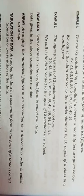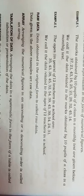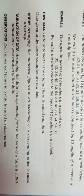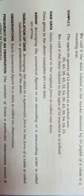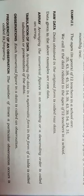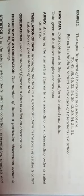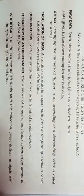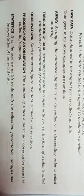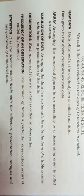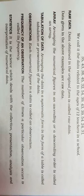Students, don't miss any definitions. All definitions should be covered because they can come in your exam. Next, tabulation of data: arranging data in a tabular form is called tabulation or representation of data. Next, observation: each numerical figure in a data is called an observation. Next, frequency of an observation: the number of times a particular observation occurs is called its frequency.